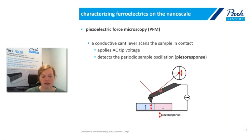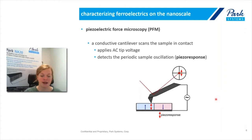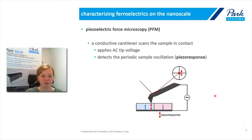We can see this piezo response here in red. The sample oscillation is detected by the beam deflection and then detected on the photodiode. The sample signals we get are: first, the phase of this piezo response compared to the excitation signal, which gives us information on domain orientation; and second, the amplitude of the piezo response, which carries information on the position of domain walls — whenever we reach a domain wall, the amplitude gets minimal.